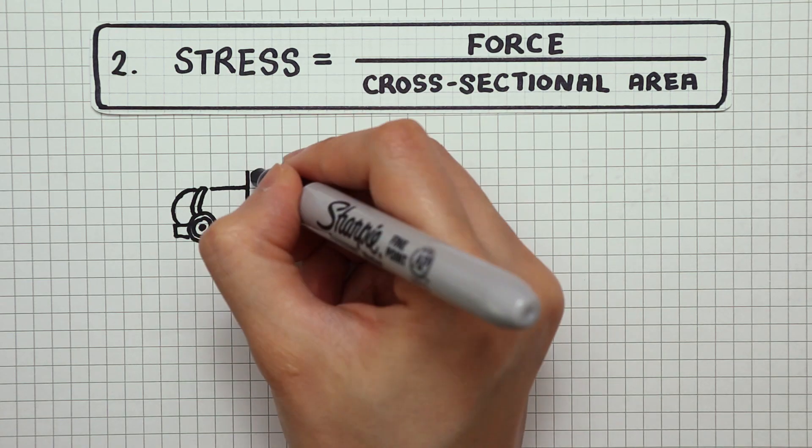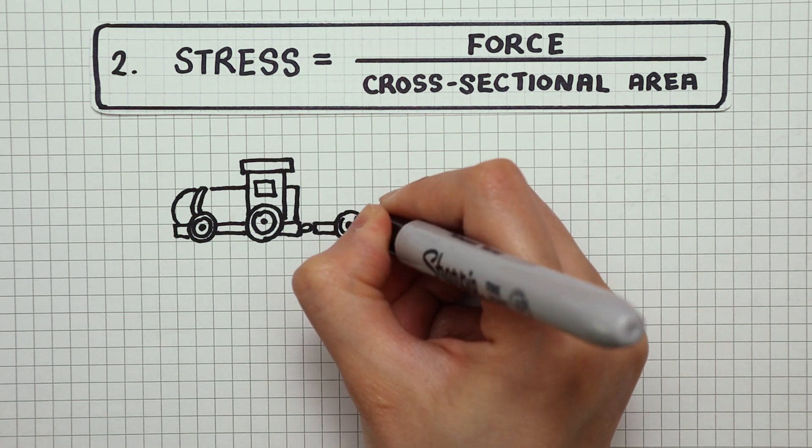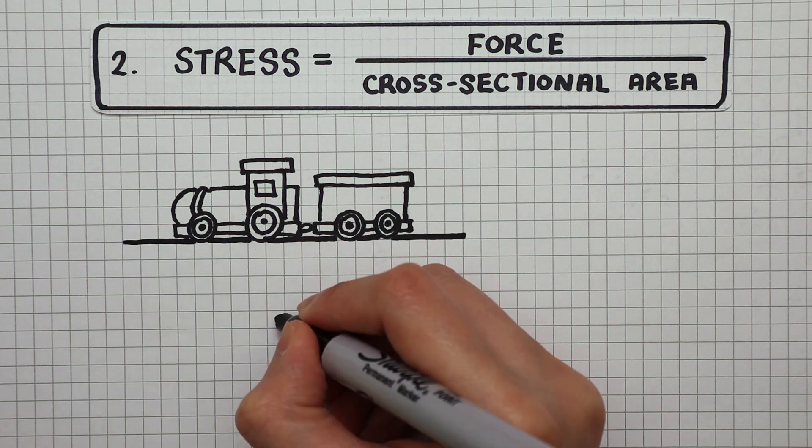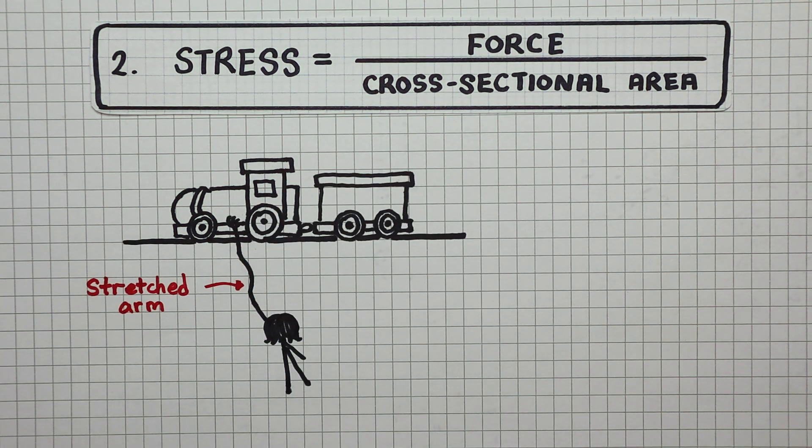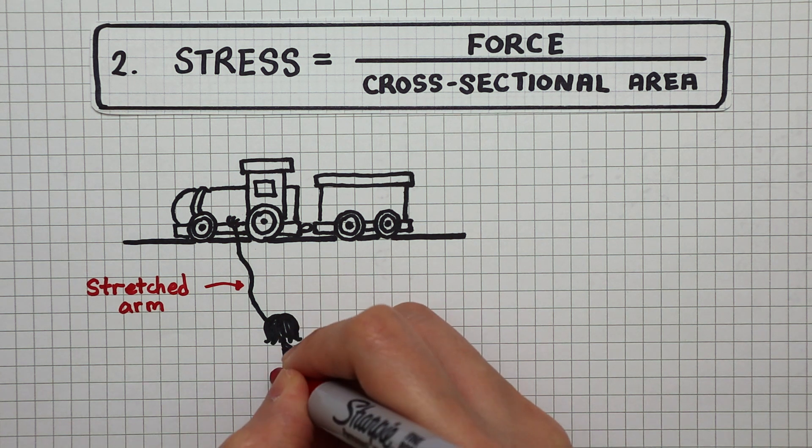Second equation. There was this scene in the movie where Elastigirl hangs from a train going over a bridge and one of her arms is fully stretched. So the force acting on her arm is just her own weight.